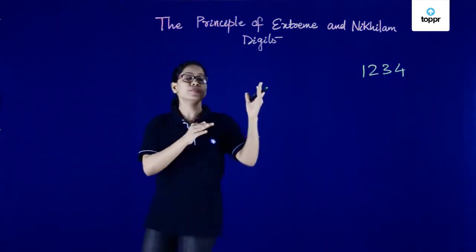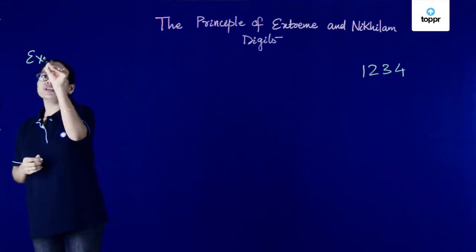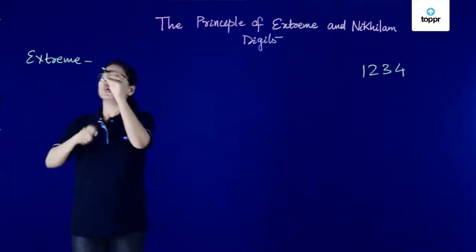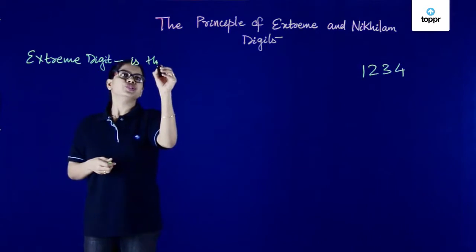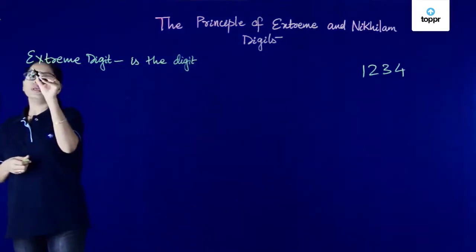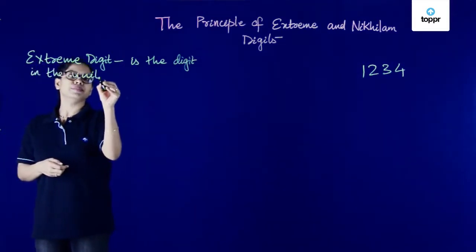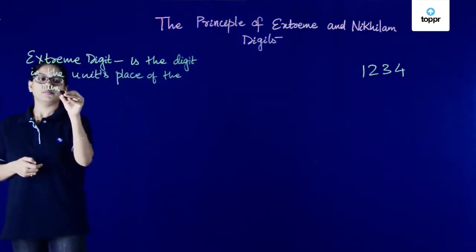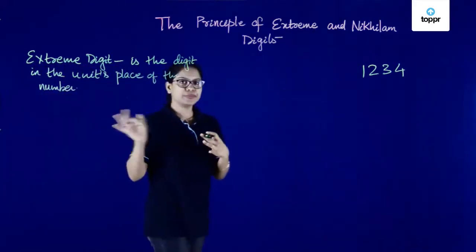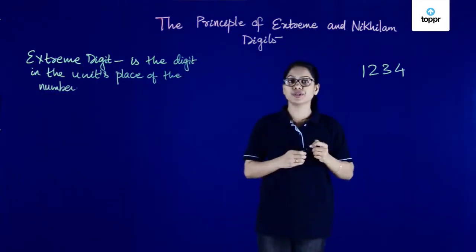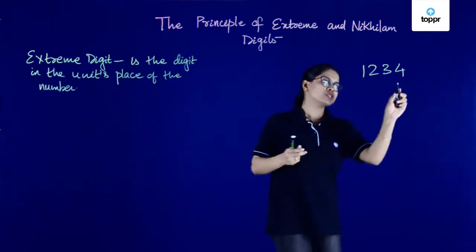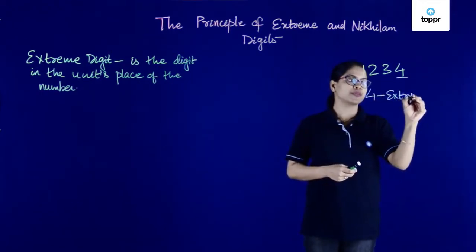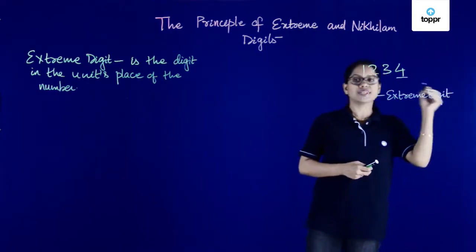Let's first discuss what is the meaning of extreme digit. An extreme digit is simply the digit that is in the unit's place of the number we are talking about. So in the number 1234, if you look at the unit's place, we have 4. So 4 here is the extreme digit. It's as simple as that.